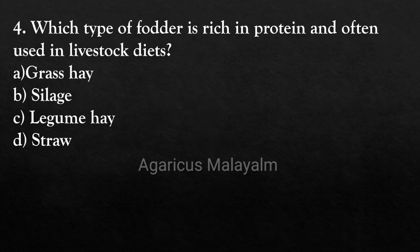Fourth question: which type of fodder is rich in protein and often used in livestock diets? Answer options: option A, grass hay; option B, silage; option C, legume hay; option D, straw.